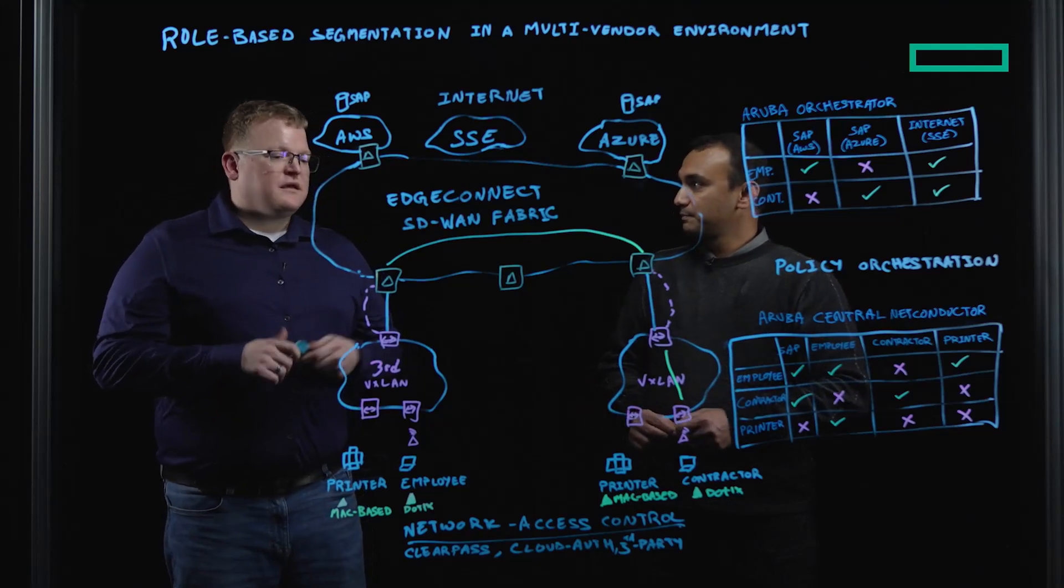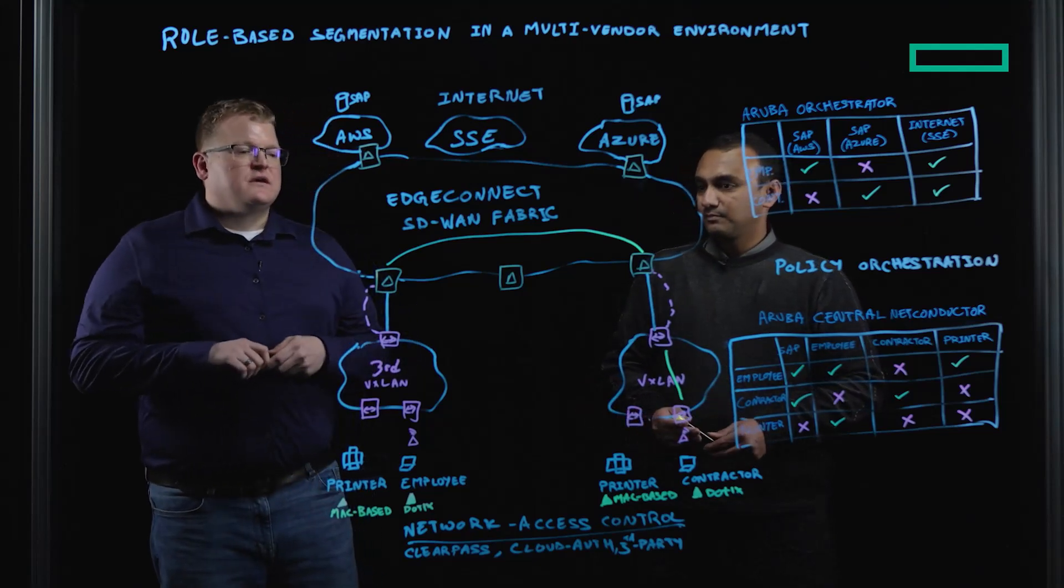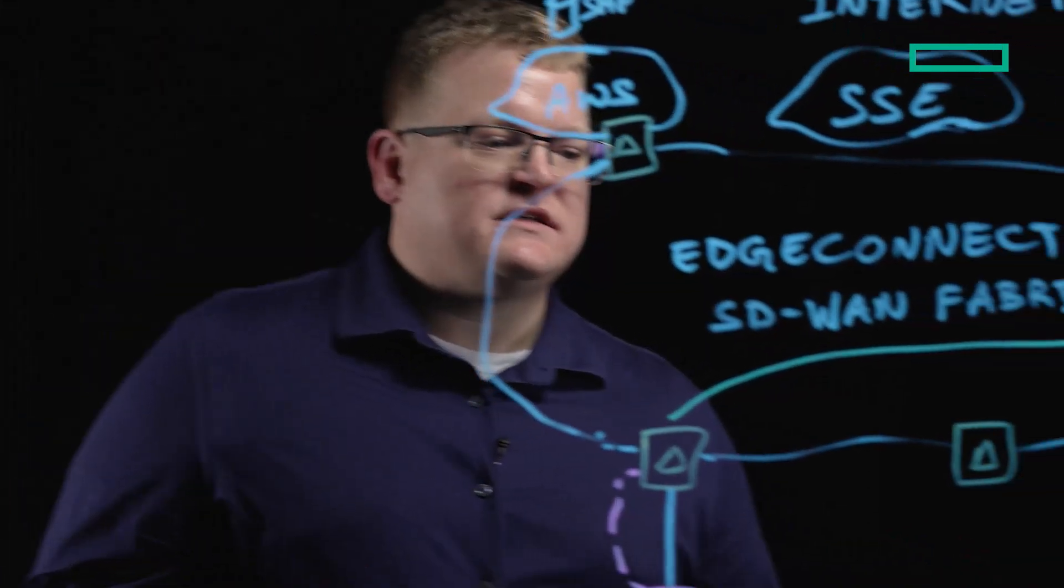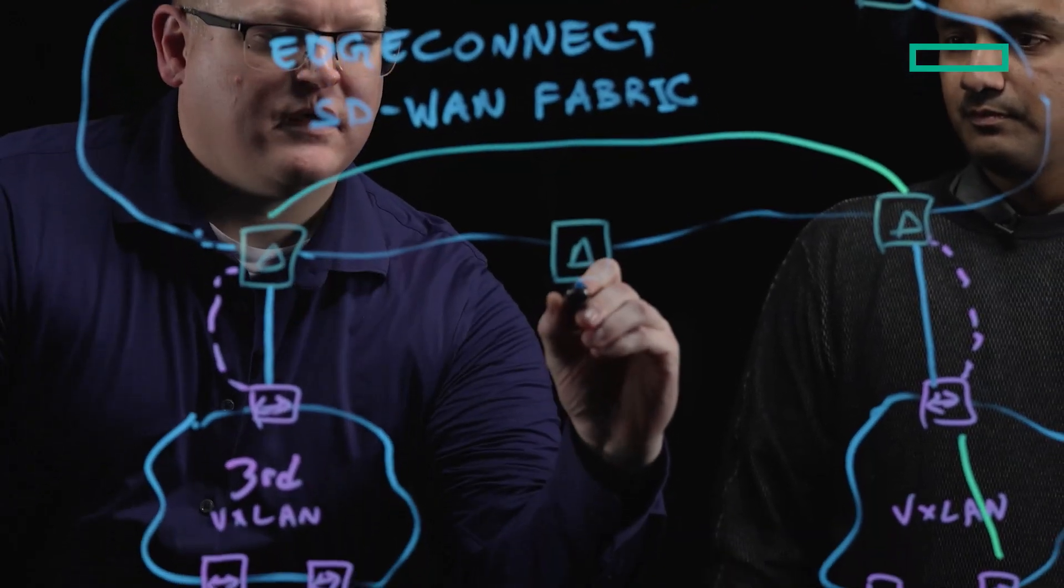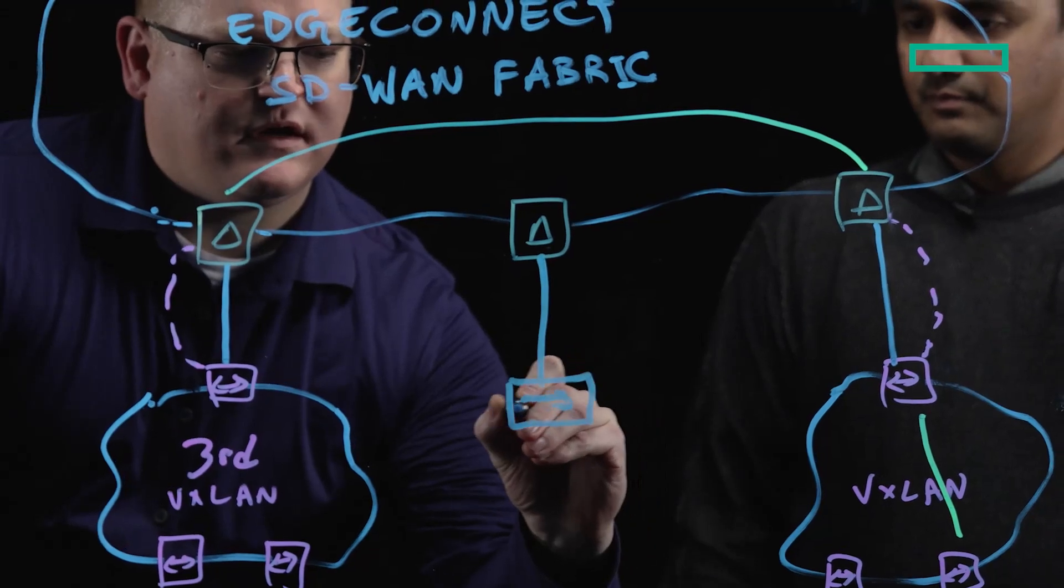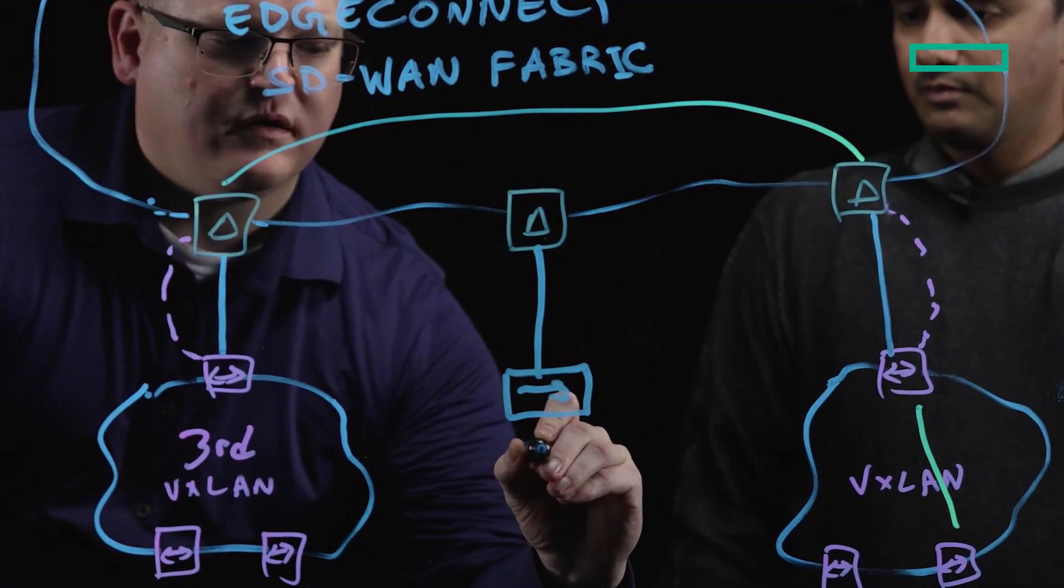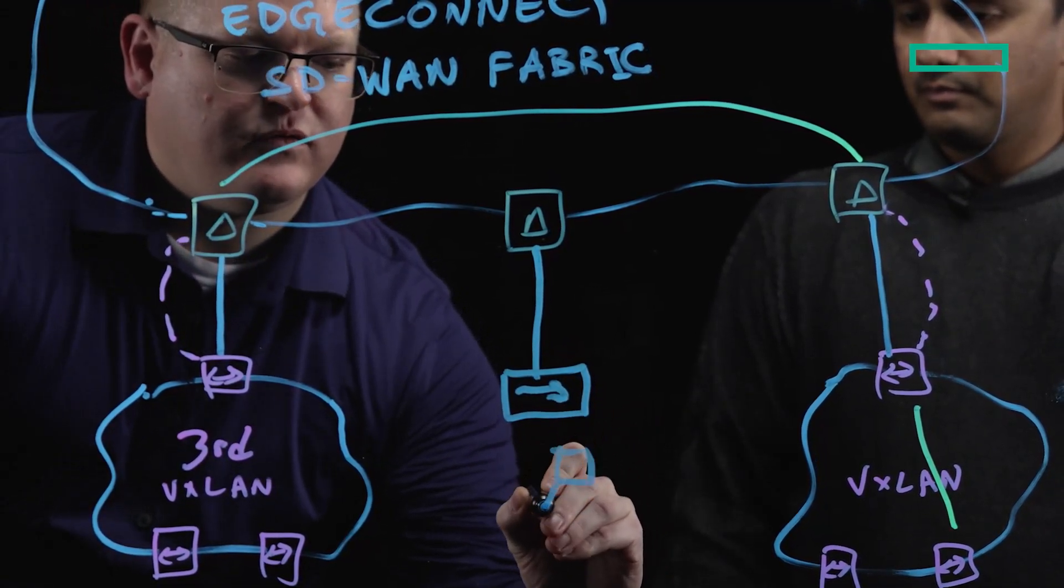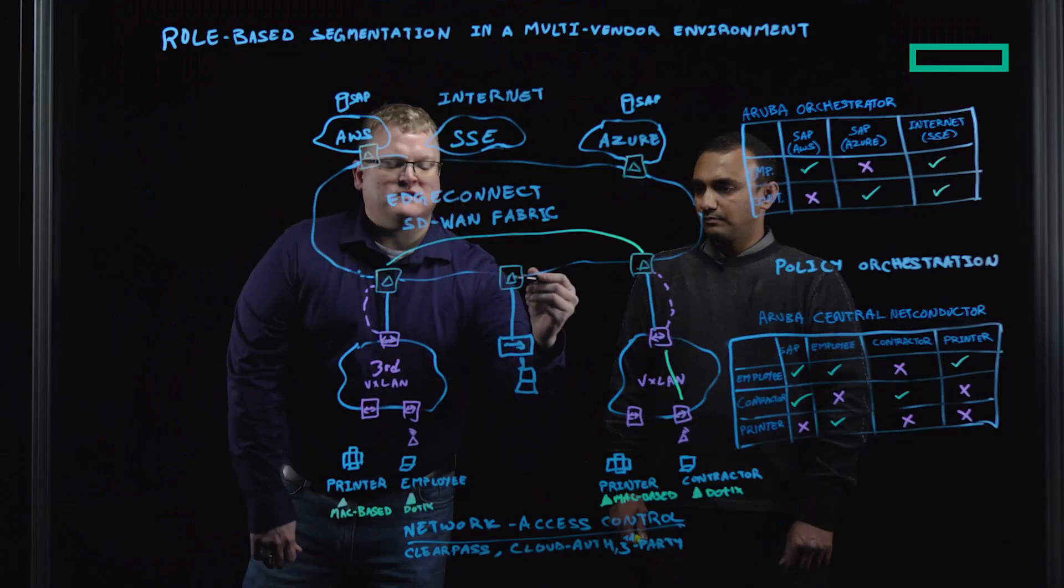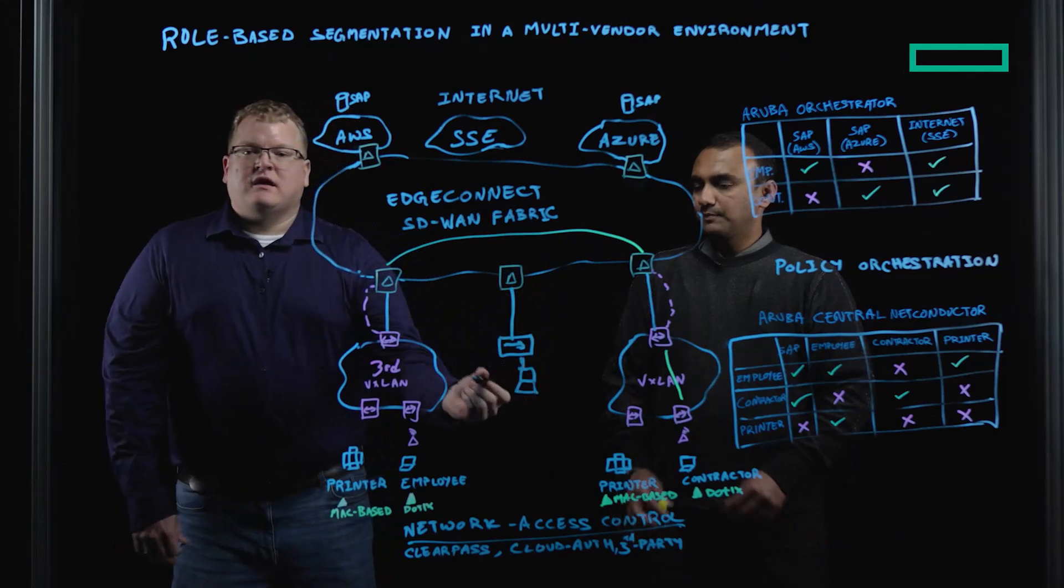Yeah, it's a great question, Prashant. So in the case of a LAN side switch that does not support VXLAN, the EdgeConnect appliance is able to use a mechanism of RADIUS snooping to learn the role information from any device that is authenticated via the NAC across the LAN side.